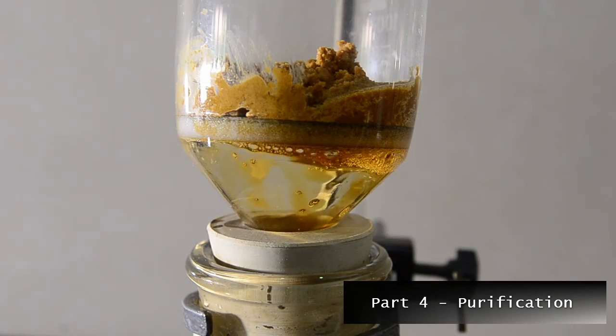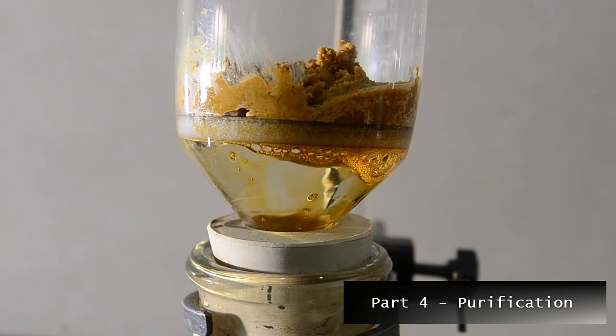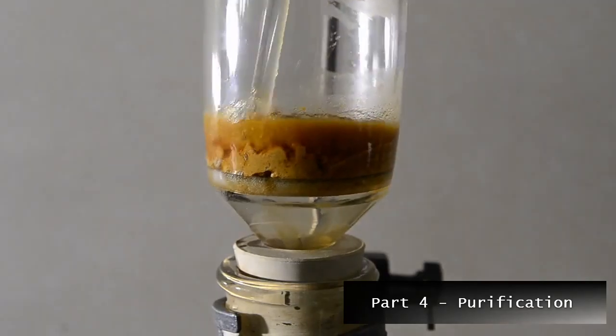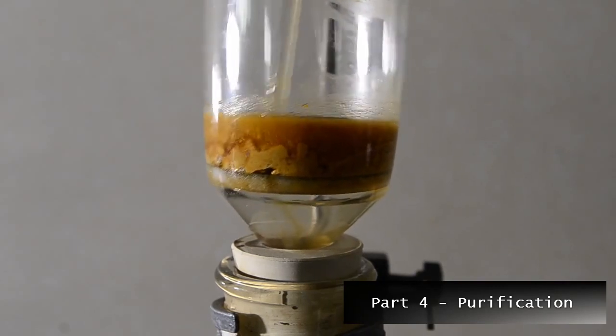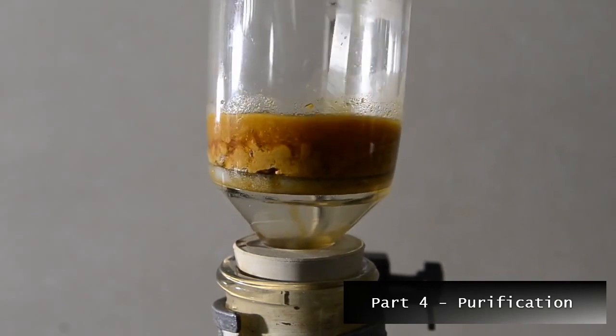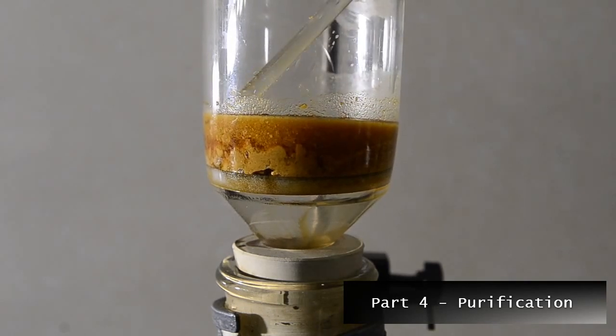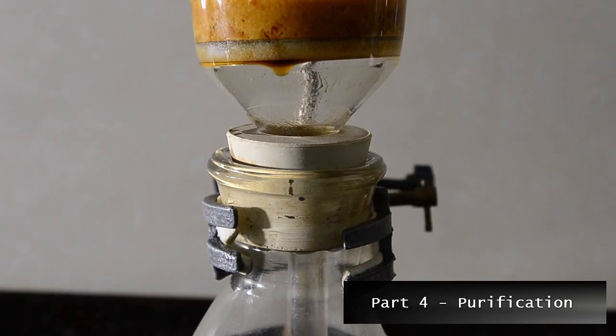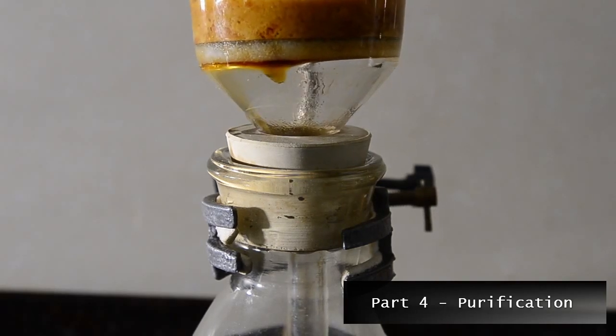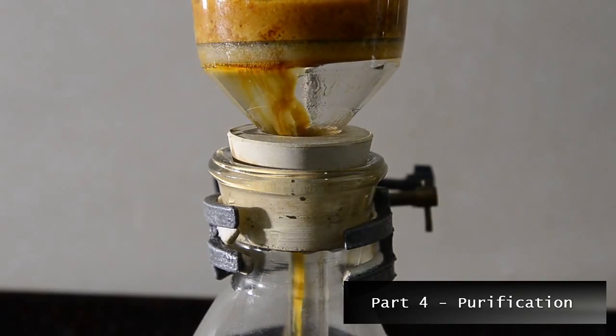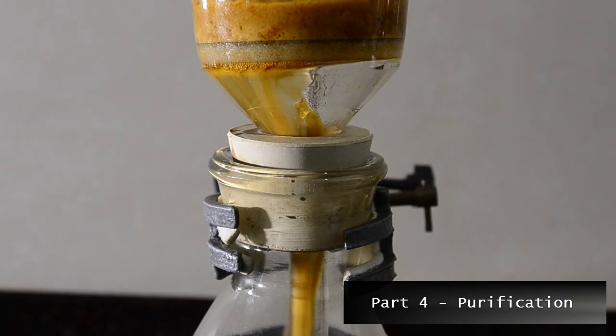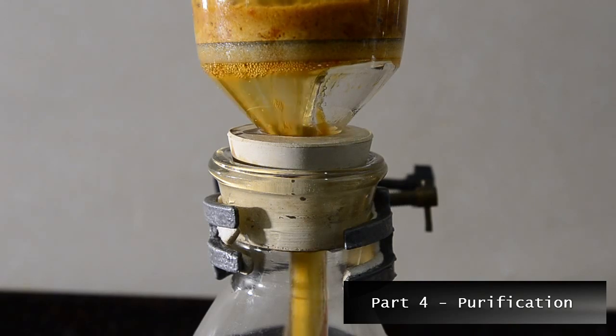It turns out that mandelic acid is not soluble in cold chloroform, so we can use this to get rid of some of the organic impurities. Add 15 milliliters of cold chloroform and break up the solid in the funnel. Then turn on the pump again and dry the solid as much as possible. We're now left with a crude mixture of mostly inorganic salts and mandelic acid.